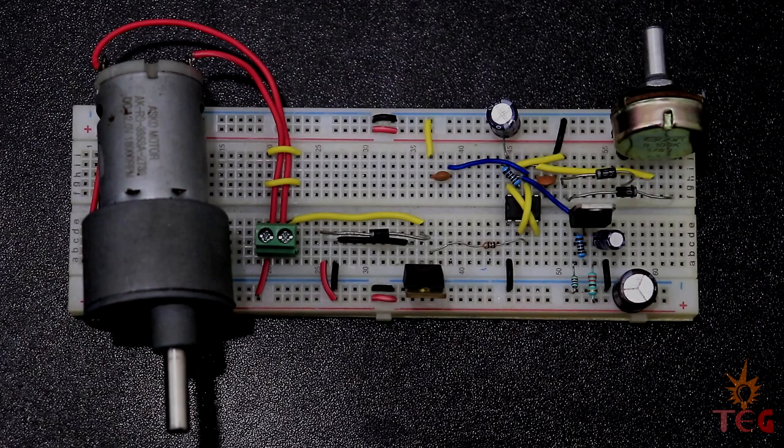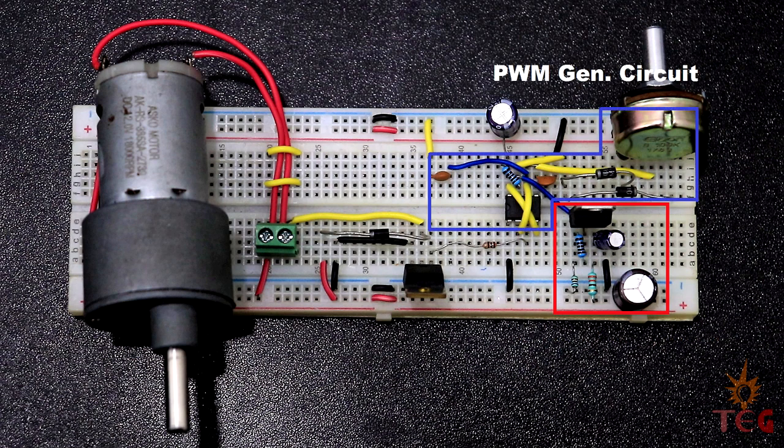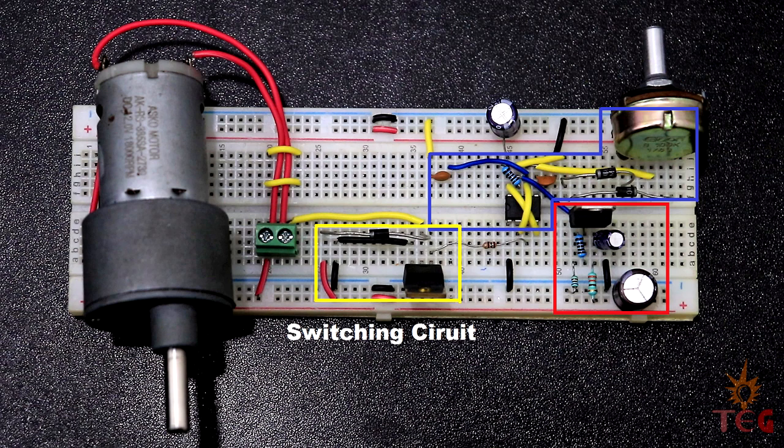At first, this circuit may seem very complicated, so let's simplify it. This circuit can be divided into three main parts: first part is voltage regulator or step-down part, second part is PWM generator, and third part is the switching circuit. Now let's dive into each part one by one.